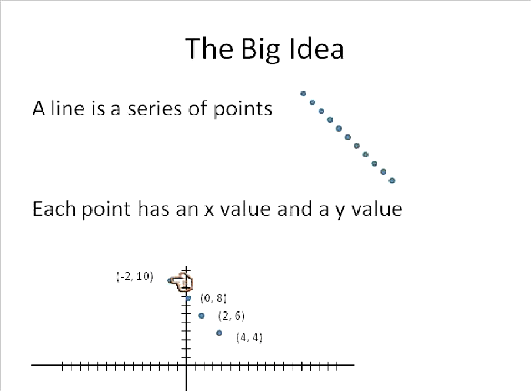Like this would be negative 2 and 10, about 0, 8. Again, they're not exactly perfect, but you can see the point here, that each point is going to have an x and a y value. That's what we're going to be looking at when we're looking at a line.